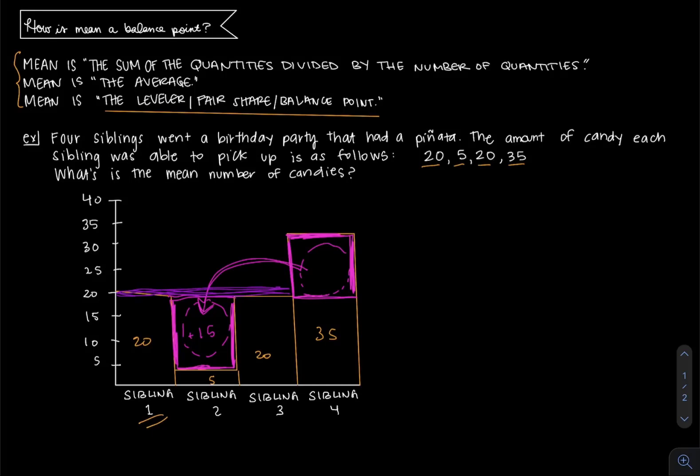But if we take 15 away from sibling 4, and then what do you know, that's 20 here. So that adds up to be 35. And so we put that amount over like we just talked about, so that now sibling 2 also has 20 because 15 plus 5 is 20.